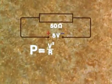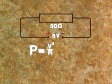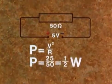Or again, suppose we have a 50 ohm resistor with 5 volts across it. What power is being absorbed? We know R and V, so we use the formula P equals V squared over R to find P. P equals 25 over 50, that is half a watt.